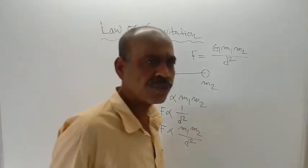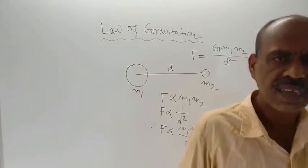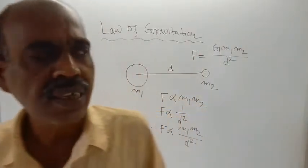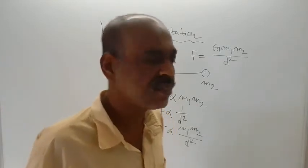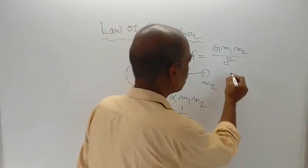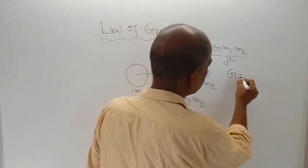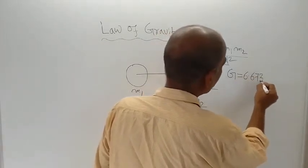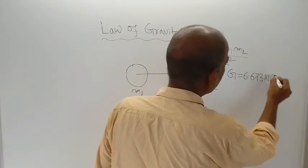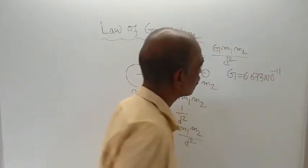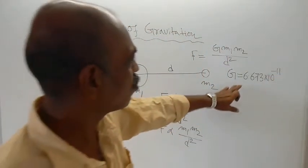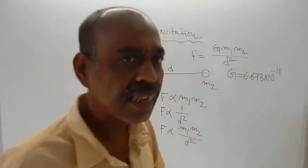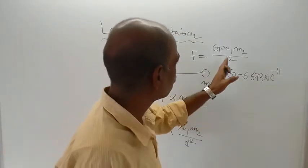The numerical value of G was not found by Sir Isaac Newton. It was experimentally determined by Lord Cavendish. The value is G equals 6.673 times 10 to the power minus 11 in SI units.